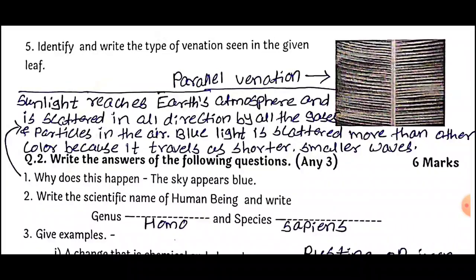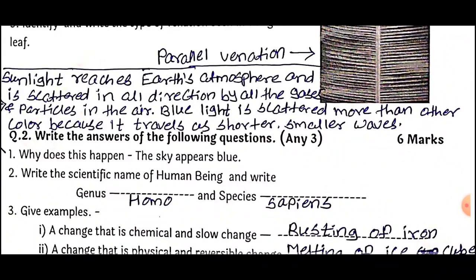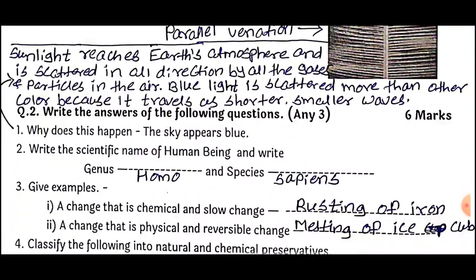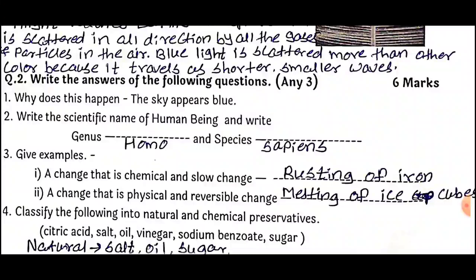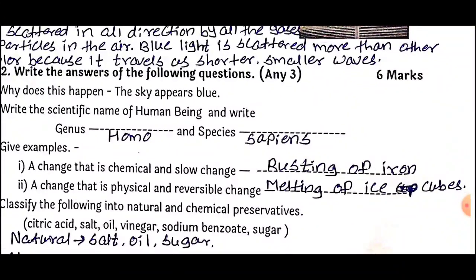Write this answer. Continue with the 2nd question: Write the scientific names of human beings. The scientific name is Homo sapiens. Give examples: A change that is chemical and slow — the answer is rusting of iron. A change that is physical and reversible — the answer is melting of ice cubes.